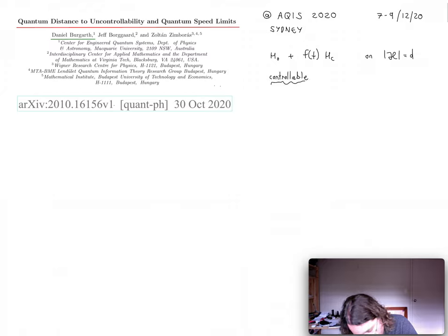Controllability then means that for any unitary evolution on the full system, I can find a choice of these control functions, which could be laser pulses or microwave pulses, such that that unitary is reached. So roughly speaking, it means that the mapping between the pulses and the unitary time evolution operators, which are the solution of the Schrodinger equation, is surjective.